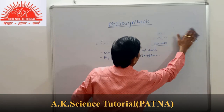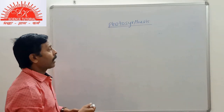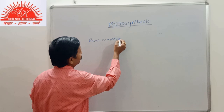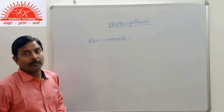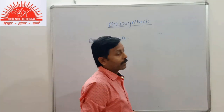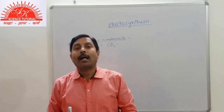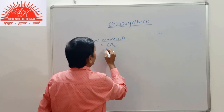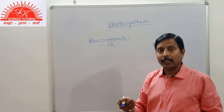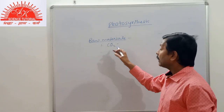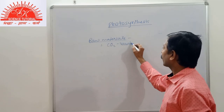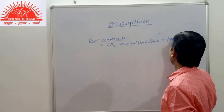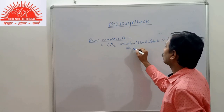Photosynthesis requires raw materials. There are two main raw materials. One is CO2 — that is carbon dioxide. Plant cells or plants obtain it from the surrounding. In terrestrial plants, they obtain it from air through stomata.